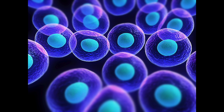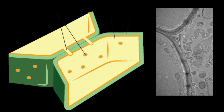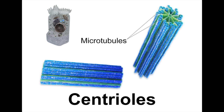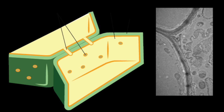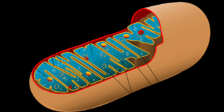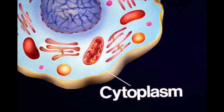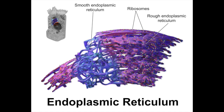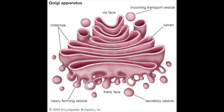To sum them up, we have the cell wall, the centriole, the cell membrane, the chloroplasts, the mitochondria, the cytoplasm, and the endoplasmic reticulum, or ER. We also have the Golgi apparatus.